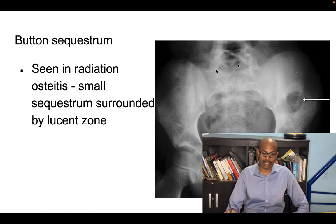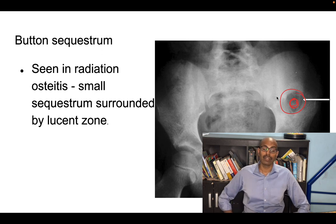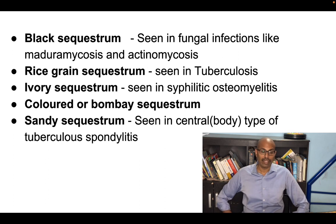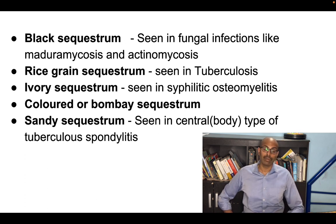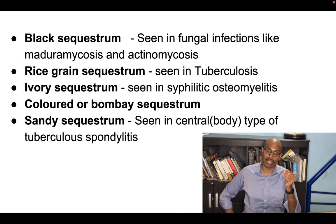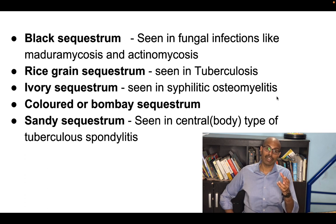Button sequestrum is a small button-like sequestrum surrounded by a large lucent area, very commonly seen in radiation-induced osteomyelitis, for example in the iliac wing. Black or Bombay sequestrum is seen in fungal infections — actinomyces, maduromycosis, or sulfur-producing fungal infections produce various pigments that stain the bone, resulting in varied coloration of the sequestrum.